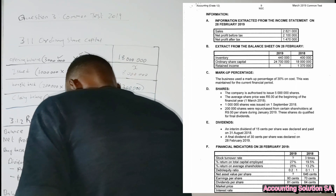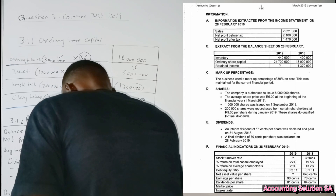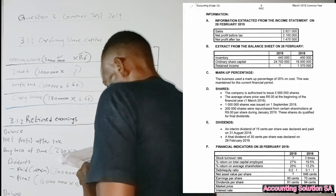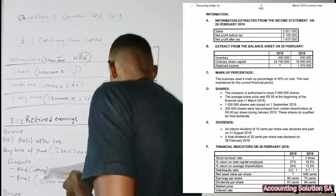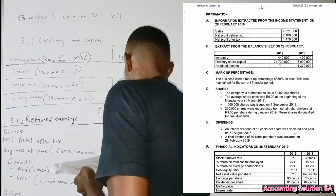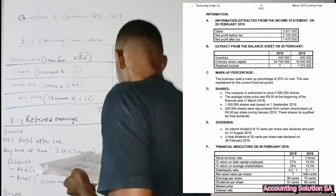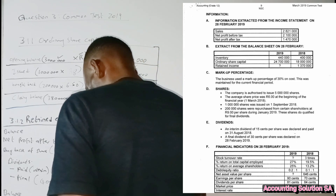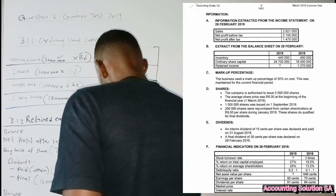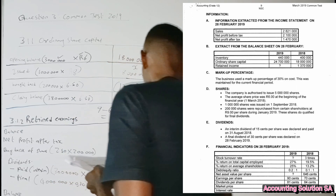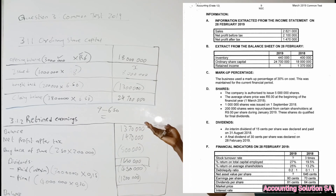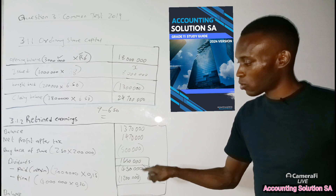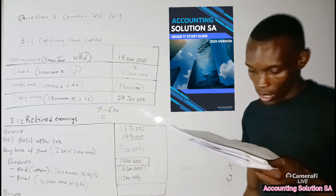The interim dividend calculation gives us 450,000 — put that in brackets. The final dividend is 1,200,000. If you add them together the total dividends are 1,650,000. Then the closing balance: opening plus net profit after tax minus share buyback loss minus total dividends. That gives you a balance at the end of 6,980,000.